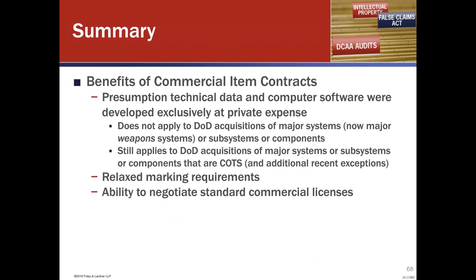Why do we like commercial item contracts? When the government challenges whether they have unlimited rights or limited rights in technical data or computer software, you're looking at who funded the development. And once the government raises the challenge, the onus for non-commercial item technical data and software is on the contractor to demonstrate it was developed exclusively at private expense — you need to find engineer timesheets and match them up to show no government funding was involved, and most contractors have a very difficult time proving that. For a commercial item contract, however, there is a presumption that the item was developed exclusively at private expense, so the burden of proof goes back to the government.